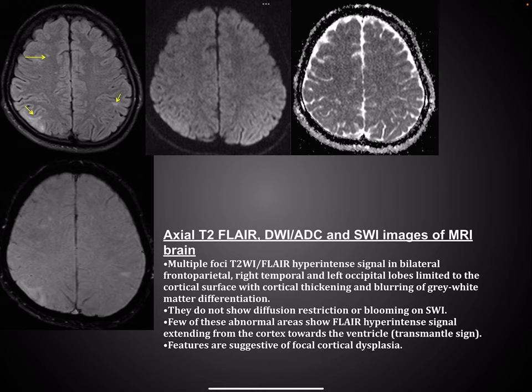Here is another case with axial T2 weighted FLAIR, diffusion weighted imaging and susceptibility weighted imaging of brain. Multiple foci of T2 FLAIR hyperintense signal in bilateral frontoparietal regions, right temporal and left occipital regions are noted, limited to the cortical surface with cortical thickening and blurring of grey-white matter differentiation. They do not show diffusion restriction or blooming. Few of these show FLAIR hyperintense signal extending from cortex towards the ventricle — the transmantle sign — features suggestive of focal cortical dysplasia.